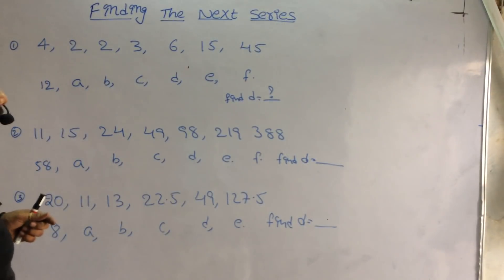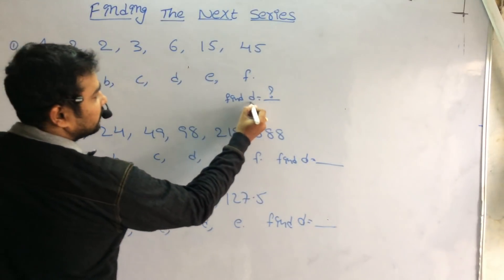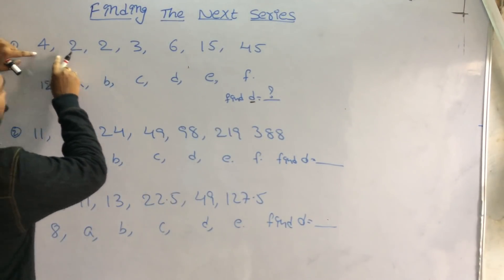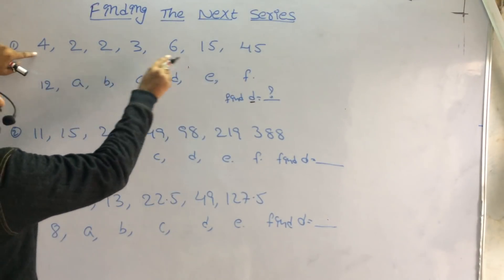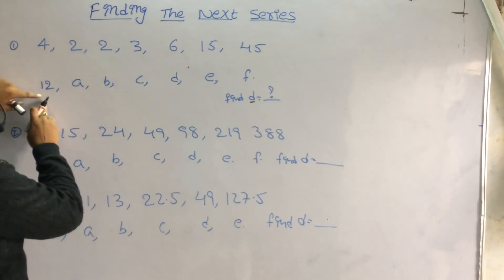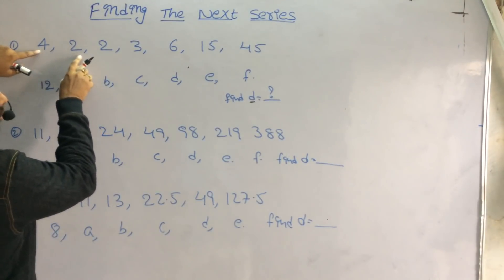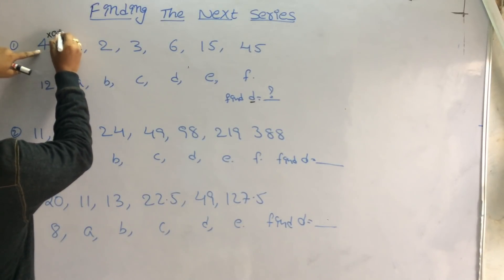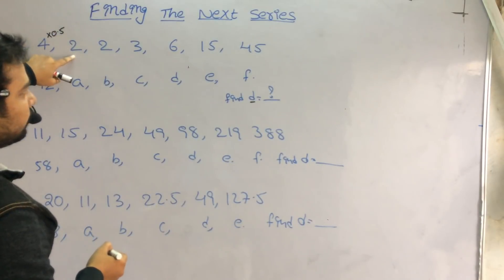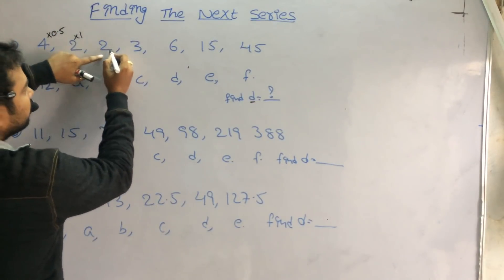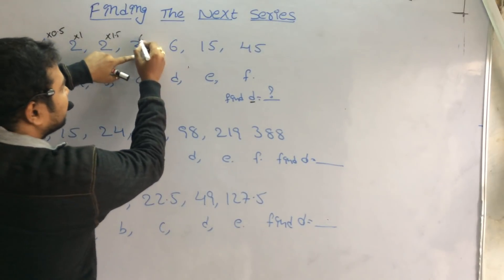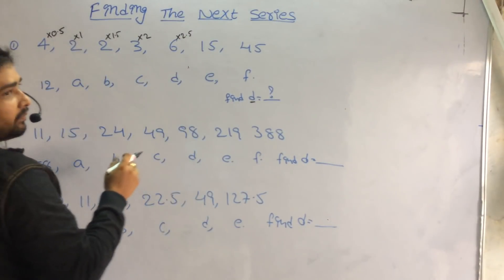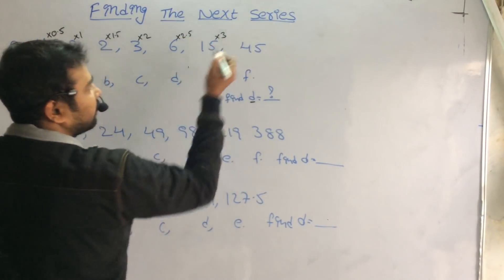In the first question, I want to find the D value. I want to find what is the logic behind the first series and apply the same logic to the second series. Here, 4 becomes 2 — how? It is multiplied with 0.5: 4 into 0.5 is 2. Then 2 into 1 is 2. Then 2 into 1.5 is 3. Then 3 into 2 is 6. Then 6 into 2.5: 6 twos are 12, plus 3 is 15. Then 15 into 3 is 45.